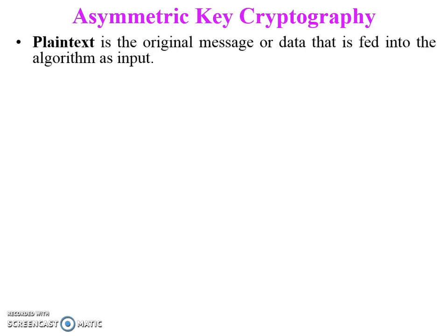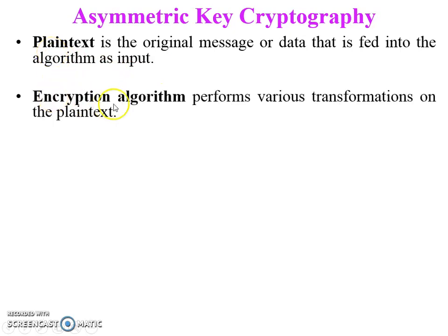Plaintext is the original message or data that is fed into the algorithm as input — the original message which the sender wants to send to the receiver. The second element is the encryption algorithm, which performs various transformations on the plaintext. The encryption algorithm takes plaintext and a key as input — either a public key or a private key — and the output of this algorithm is ciphertext.